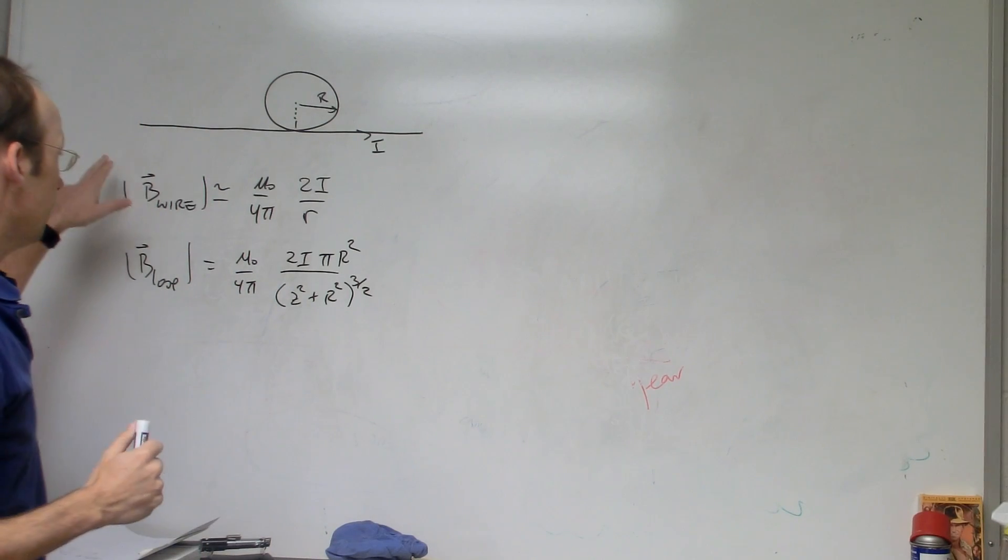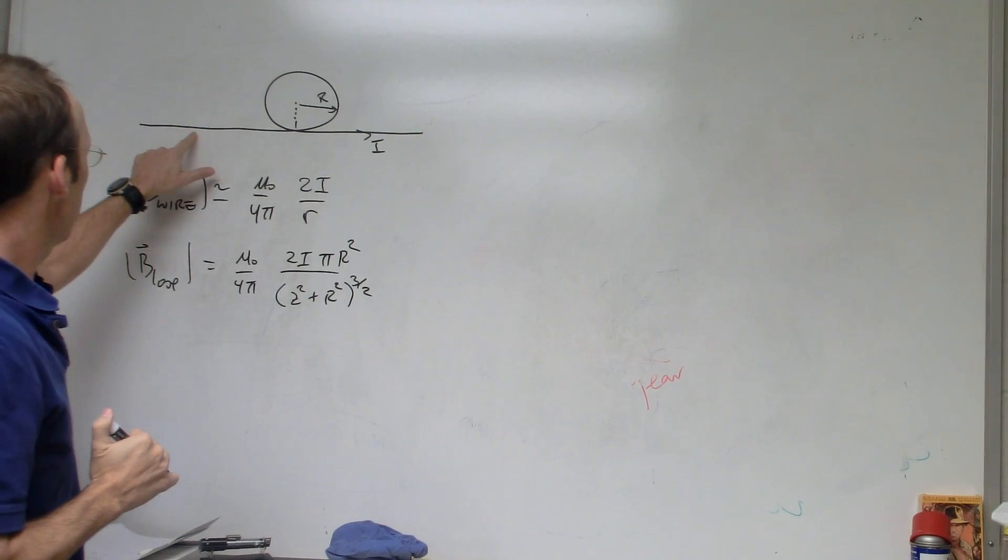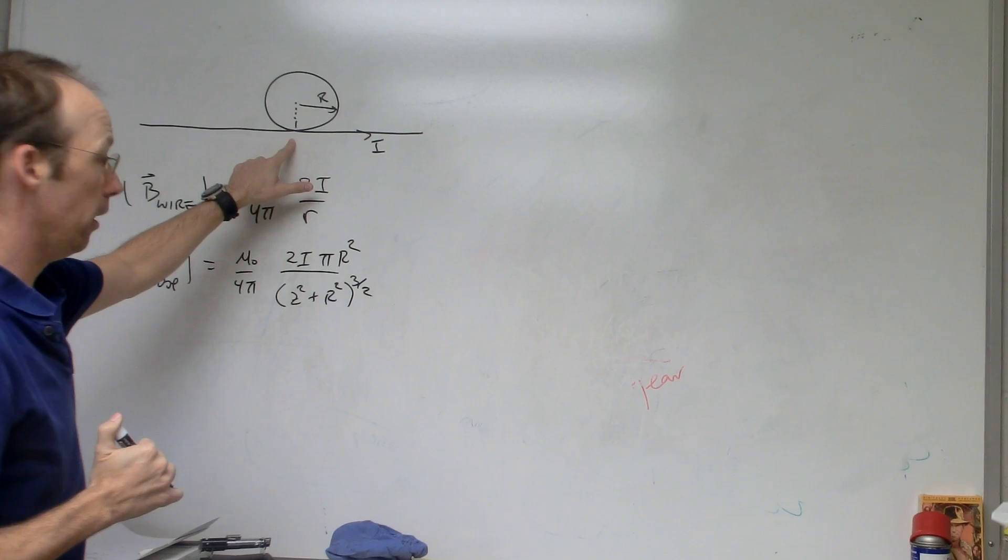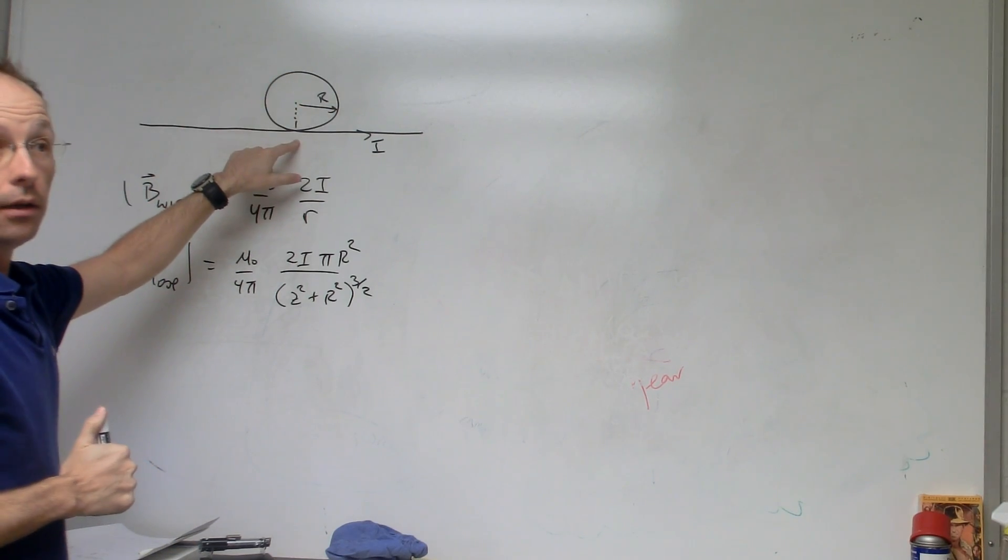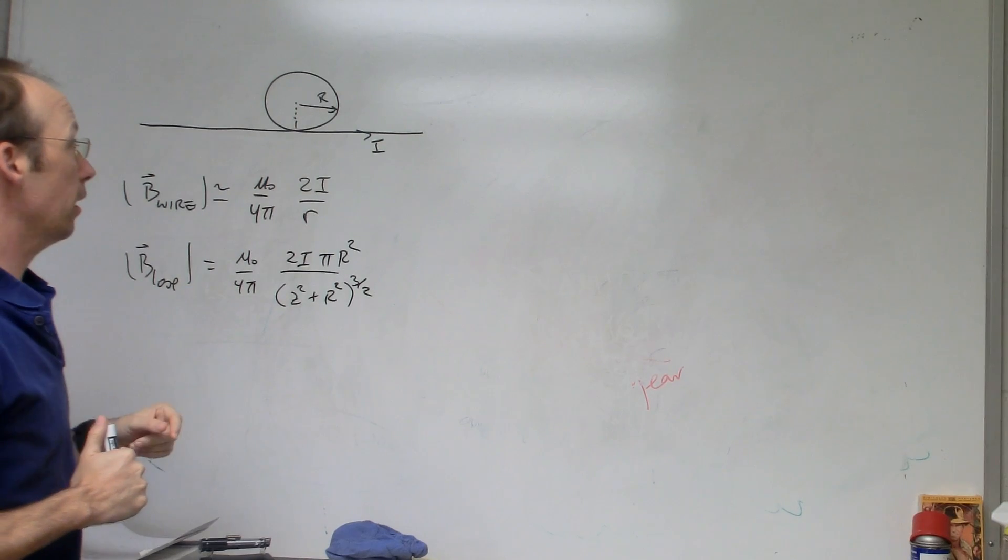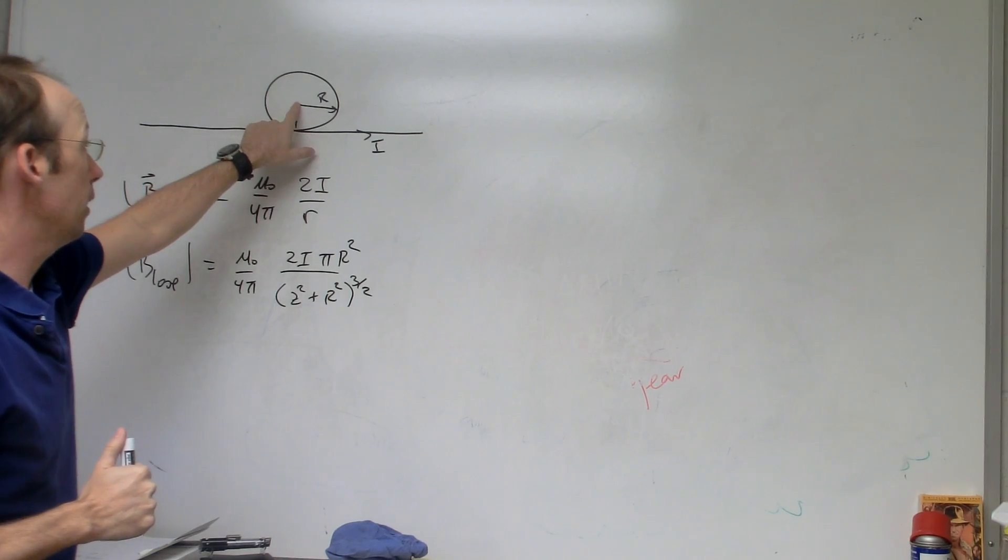Okay, so here was the problem. This is a long wire with current, and then it makes a little loop like that. And the question was, what's the magnetic field in the middle of that loop?